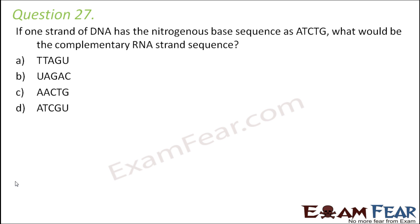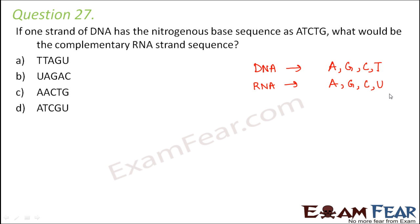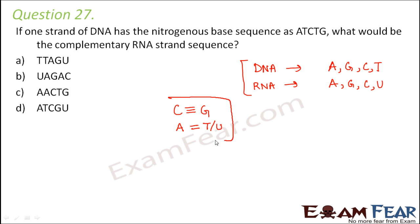Question number 27. If one strand of DNA has the nitrogenous base sequence A, T, C, T, G — what would be the complementary RNA strand sequence? The nitrogenous bases for DNA are A, G, C, and T (adenine, guanine, cytosine, and thymine). For RNA, the bases are A, G, C, and U — so instead of thymine, you have uracil in RNA. As per the base pairing rule, cytosine always pairs with guanine by a triple bond, and adenine always pairs with uracil or thymine by a double bond.